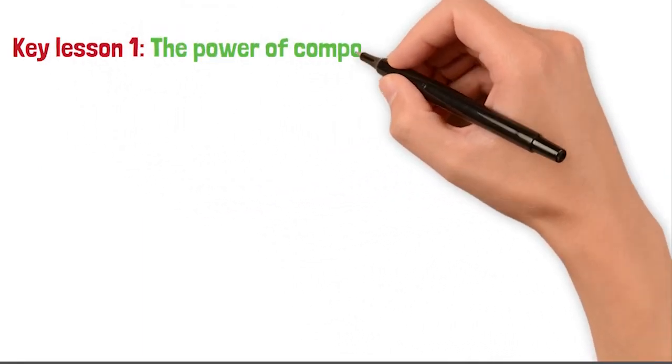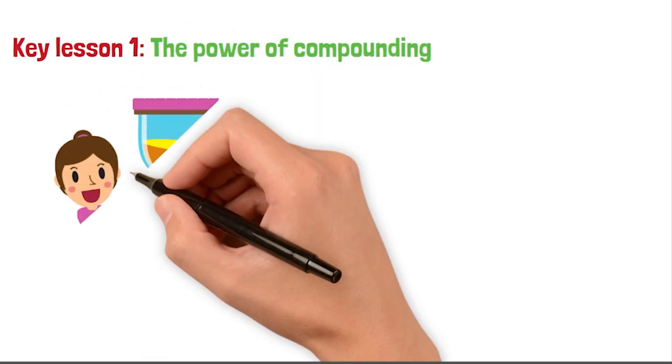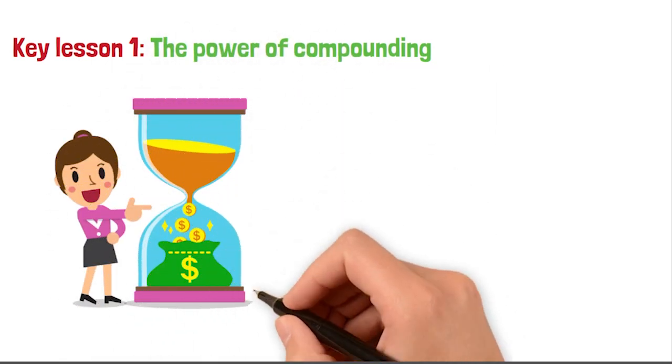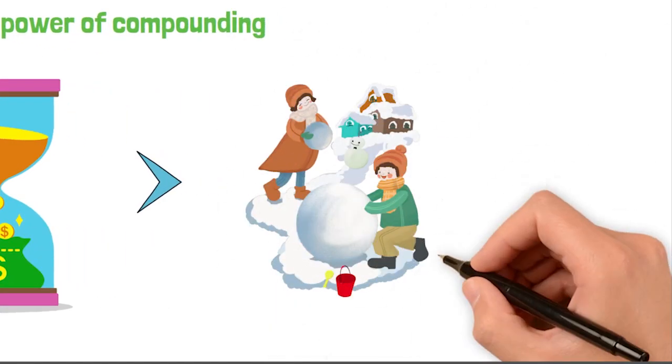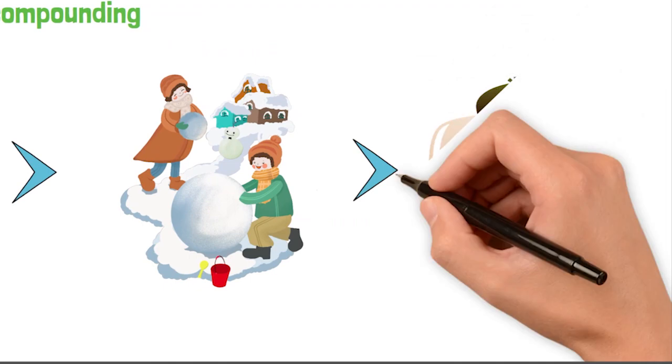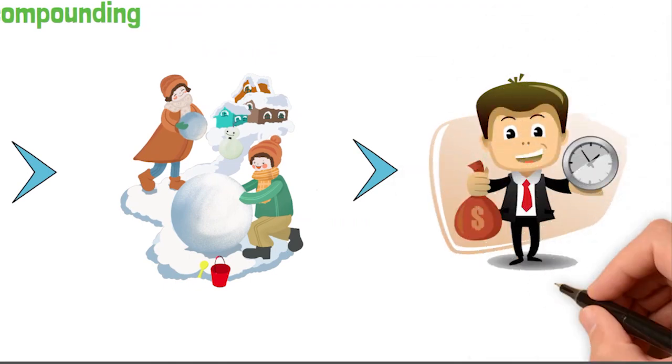The Power of Compounding. When something compounds, it means that a little growth today can fuel even more growth in the future. It's like a snowball effect that keeps getting bigger as it rolls downhill. This compounding magic can lead to astonishing results that might seem too good to be true.